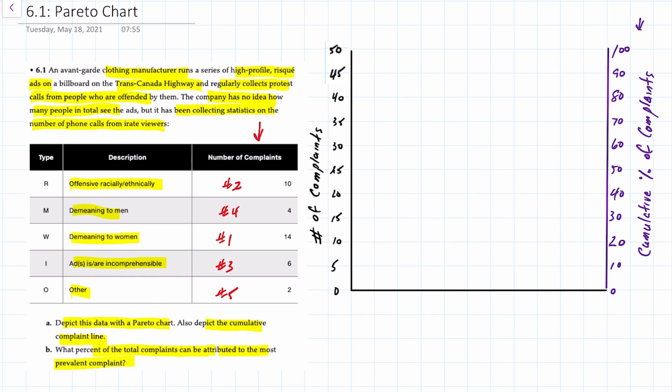We'll place these on our Pareto chart in the order that we've identified them. So demeaning to women has the highest number of complaints with 14. So we'll draw this and we'll go to about 14 complaints which is about here.